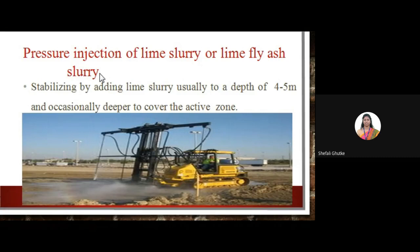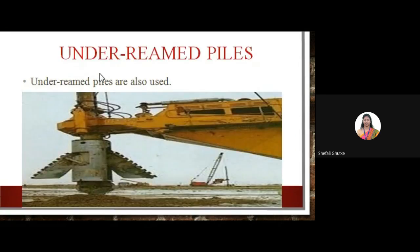Pressure injection of lime slurry or lime fly ash slurry can stabilize the soil usually up to a depth of 4 to 5 meters, and occasionally deeper, to cover the active zone, which ultimately reduces the swelling property of the soil. Under-reamed piles are basically used for black cotton soil, where under-reamed bulbs are provided in the pile foundation to reduce the moisture content of the soil.